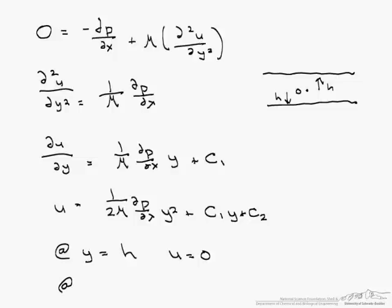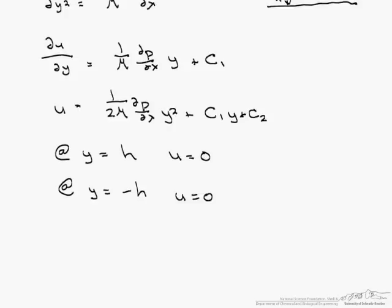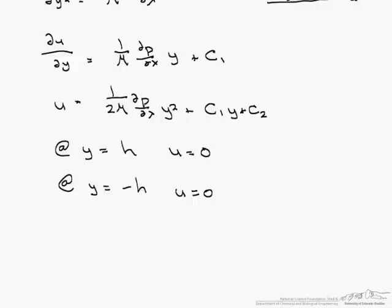We can also say at y equals negative h, u also equals 0. Again, the purpose of a boundary condition is to find a velocity at a certain length or boundary. So here we are looking at our y equaling h and our y equaling negative h and knowing what the velocities are there. This allows us to rewrite our original equation using the two boundary conditions.